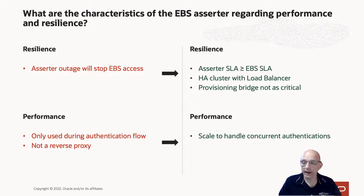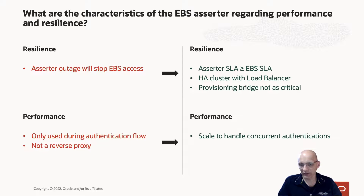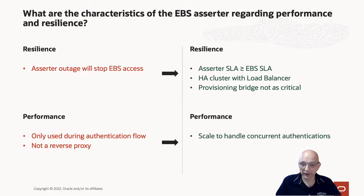Let's assume at this point that the user no longer has a local password within EBS. Therefore, it's very important that the Assertor has the same level of performance and resilience as EBS. The SLA for it should be at least as good as EBS. You don't want your EBS server sat highly resilient across four nodes and then the Assertor sat on one small box in the corner — if that box goes down, you're going to lose access to EBS. If you've got EBS on a two-node cluster, put your Assertor on a two-node cluster. Front it with a load balancer; if you're running on OCI, you can use load balancer as a service.